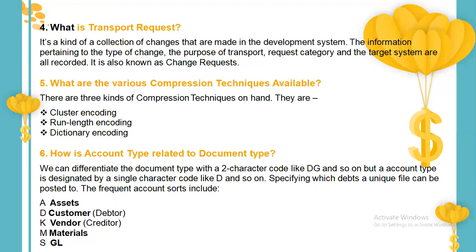How is account type related to a document type? Document type is represented by a two-character alphabetic code, while account type is represented by a single-character code. There are five account types: A for assets, D for debtor (customer), K for creditor (vendor), M for materials, and S for GL. This is the key difference between document type and account type in SAP.